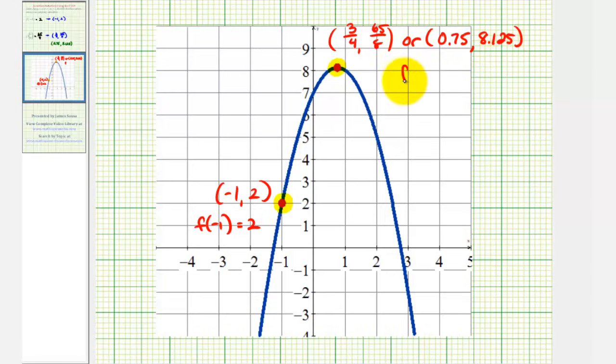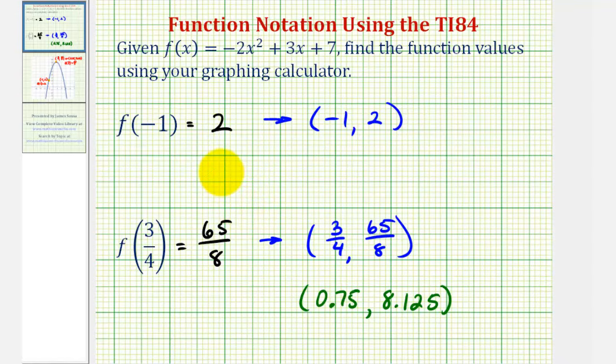This is because we found that f of 3 fourths equals 65 eighths, or 8.125. Now of course, we could have found these function values by performing substitution into the function, but it's nice to be able to check these function values on the graphing calculator. I hope this was helpful.